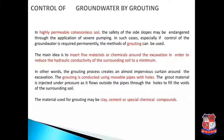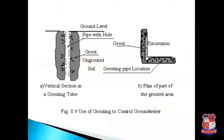Next is control of groundwater by grouting. In highly permeable cohesionless soil, where safety of side slopes may be endangered or permanent groundwater control is required, grouting can be used. The main idea is to insert fine material or chemical around the excavation to reduce the hydraulic conductivity of the surrounding soil to a minimum — creating an almost impervious curtain. Grout is injected under pressure through a movable pipe with holes, filling the voids of the surrounding soil. Materials used may be clay, cement, or special chemical compounds.